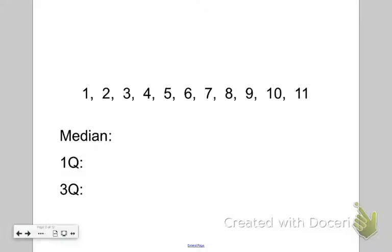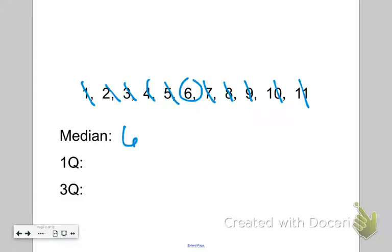Let's take a look at this set of numbers, numbers 1 through 11. What we're going to do is figure out the median, the first quartile, and the third quartile, just like we did in our previous lessons. Crossing them off and working my way to the middle, it looks like our median is 6.